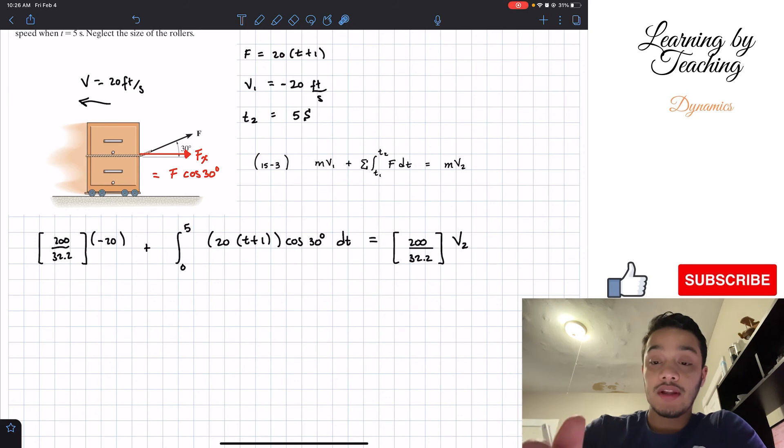And everything on the left side will give me a total of 178.89 and this should be equal to 200 over 32.2 and the velocity at the second point.